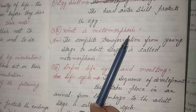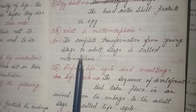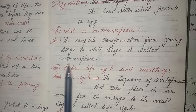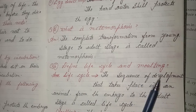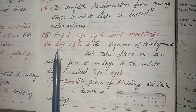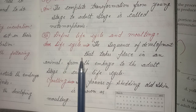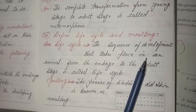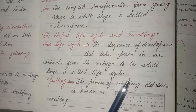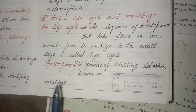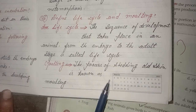Five, what is metamorphosis? Answer: The complete transformation from young stage to adult stage is called metamorphosis. Six, define life cycle and moulting. Life cycle: The sequence of development that takes place in an animal from the embryo to the adult stage is called life cycle. Moulting: The process of shedding old skin is known as moulting.